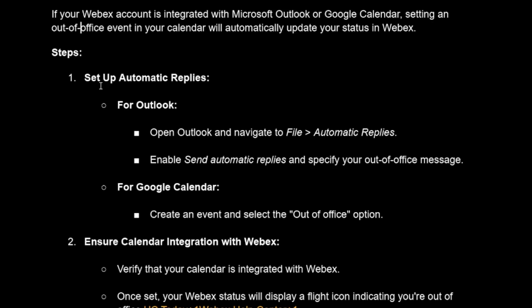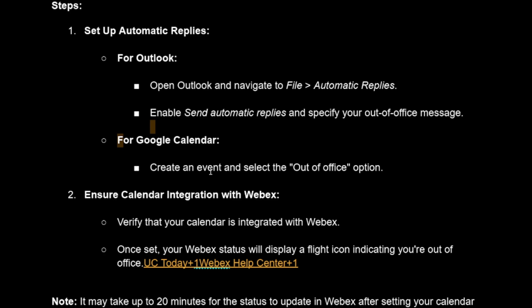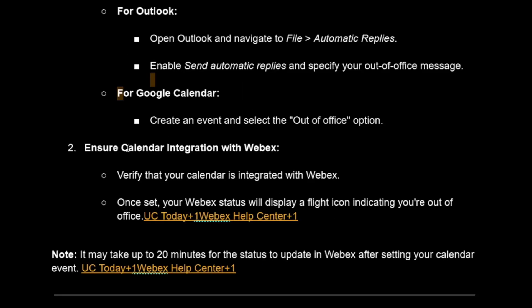For the first step, you'll need to set up automatic replies. For Outlook, open Outlook, navigate to File, then Automatic Replies, enable 'Send Automatic Replies,' and specify your out of office message. For Google Calendar, just create an event and select the out of office option.